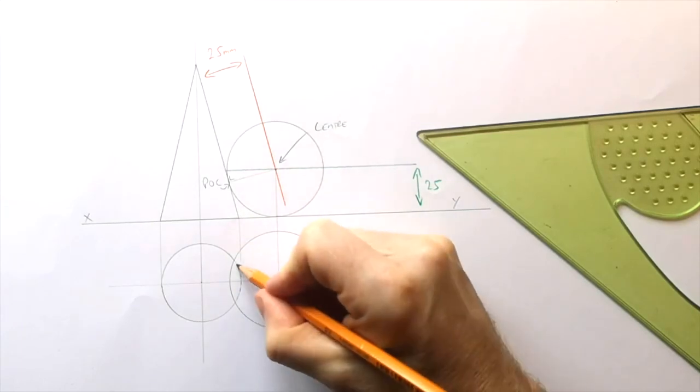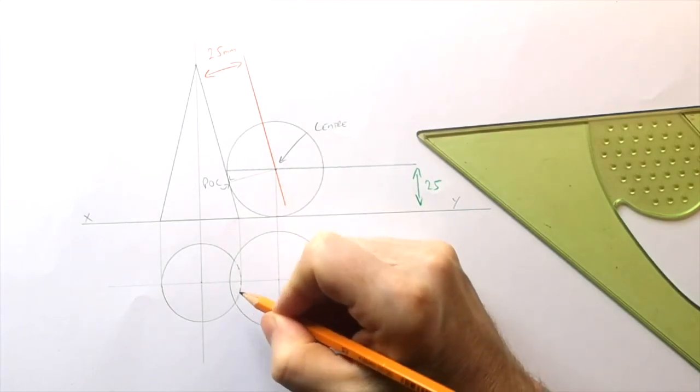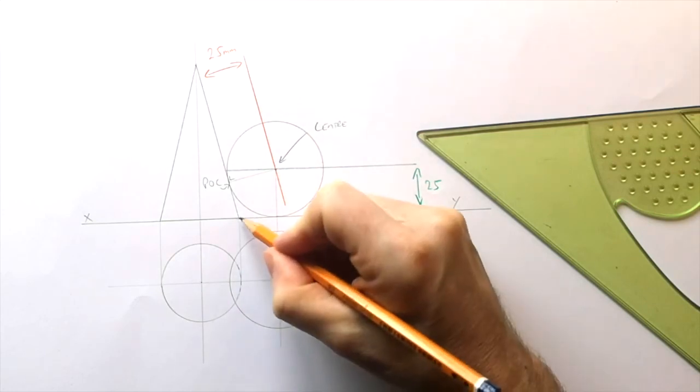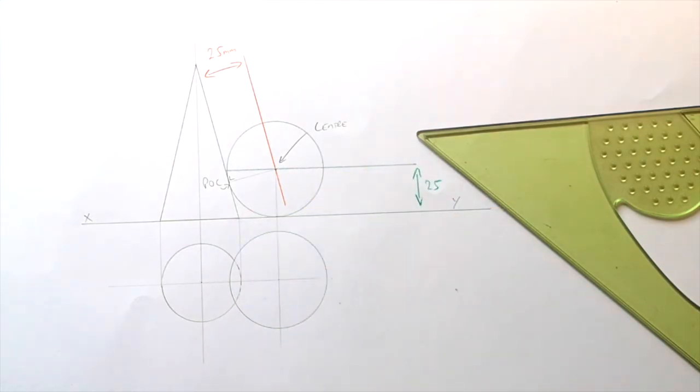Because that is a hidden line. It may not show up super well on camera, but that is a dash, dash, dash, dash. Because this little bit is hidden underneath when we look at it. There you go.